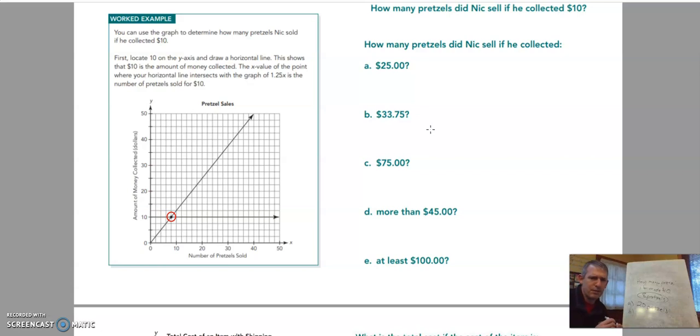So what would that equation be? Well, I know that if I buy 20 pretzels, I get $25. And they tell me it's $1.25 per pretzel. So if my y equals how much I get, and my x represents how many pretzels I sold, I could just multiply the number of pretzels sold by $1.25, and I would get the amount of money.